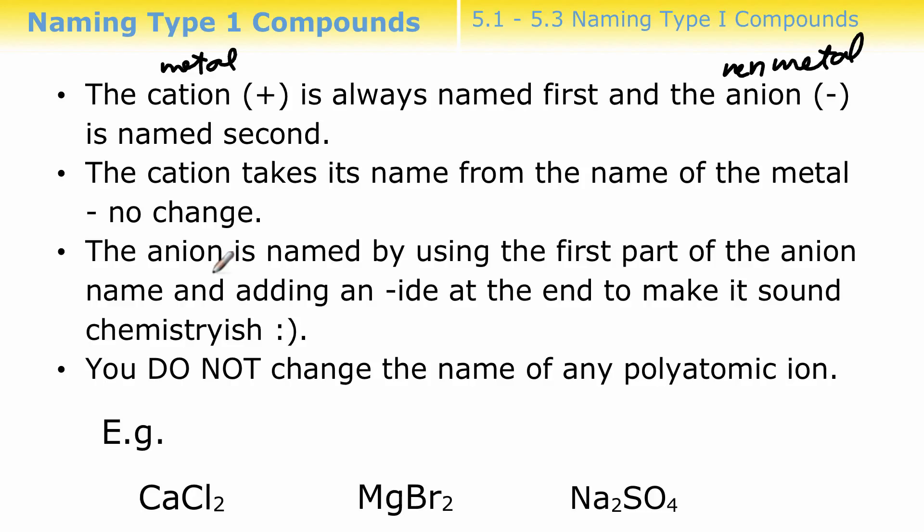For the anion, we shorten it up a little. We use the first part of the anion name and then add an -ide at the end to make it sound chemistryish. Most of them are straightforward. Just one other thing: if you have a metal and you hook it up with a polyatomic ion, you don't do this -ide thing. You just leave it as is.